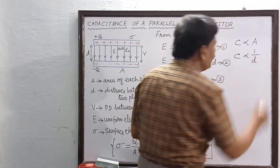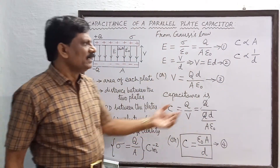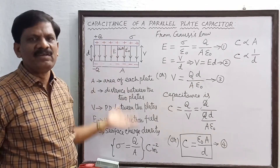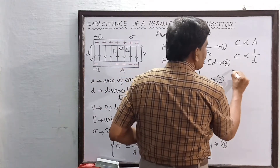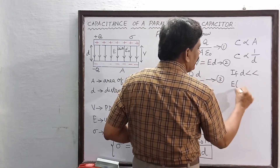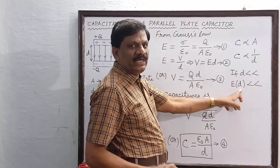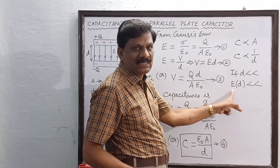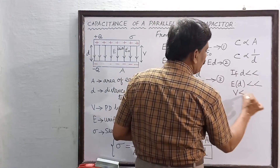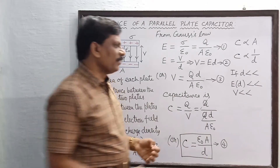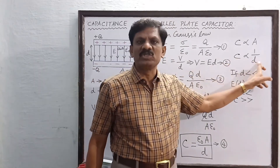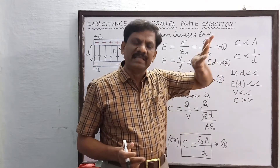C is also inversely proportional to d. When the distance of separation decreases, and the electric field is constant, the product E·d decreases — meaning the potential difference decreases. As a result, the capacitance C increases. That is why C is inversely proportional to d: when d decreases, C increases.